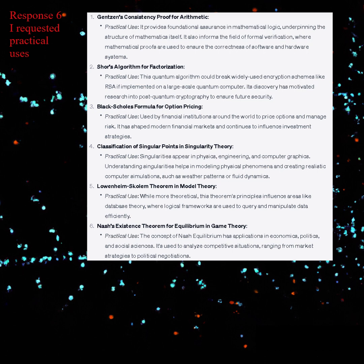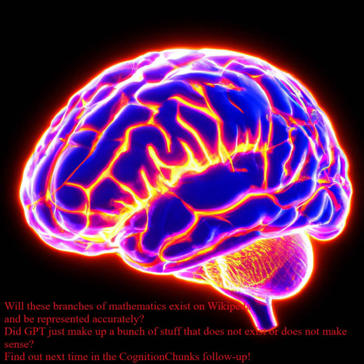The applications of these mathematical results are far-reaching, extending beyond pure mathematics into diverse areas like technology, finance, physics, and social sciences. They exemplify how abstract mathematical reasoning leads to practical tools and insights that shape our world in profound ways. Even if the proofs themselves may not be directly used in a conventional sense, the theorems they prove and the understanding they provide lead to tangible applications with broad societal impacts. Will these branches of mathematics exist on Wikipedia and be represented accurately? Did GPT just make up a bunch of stuff that does not exist or does not make sense? Find out next time in the Cognition Chunks follow-up.